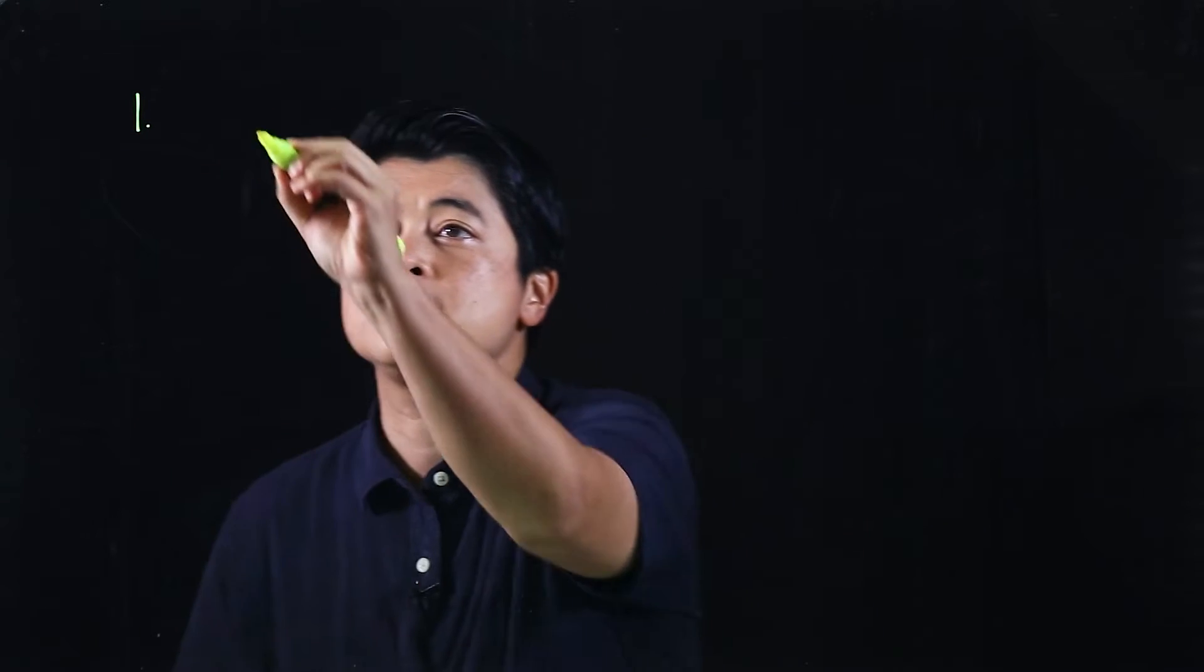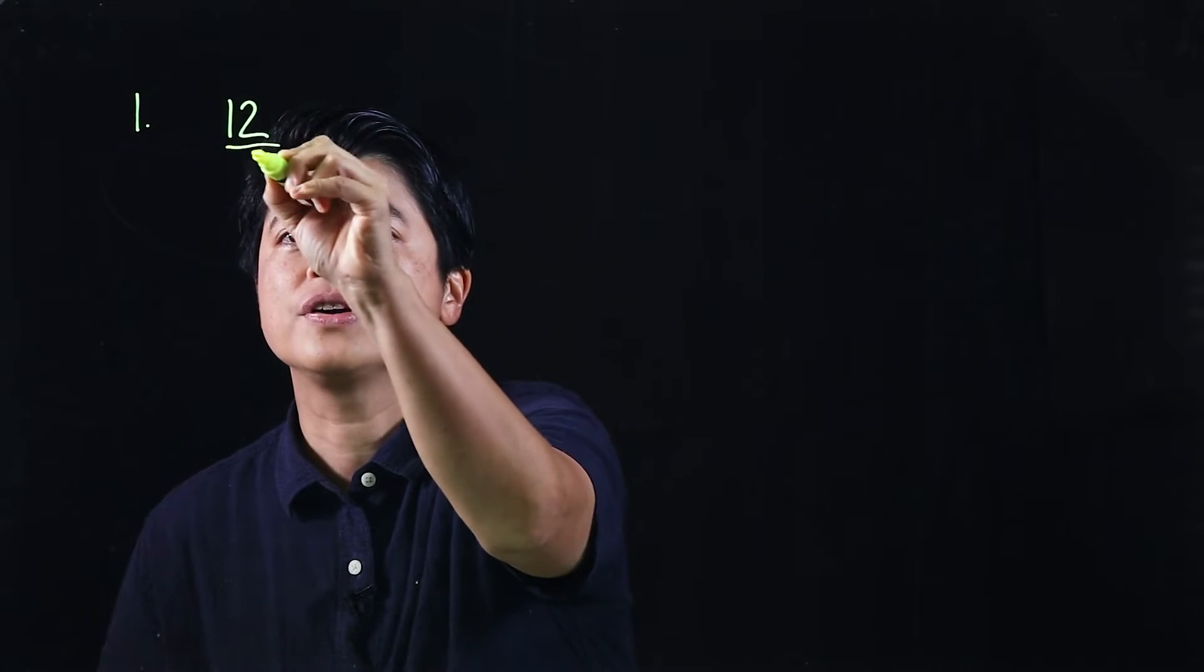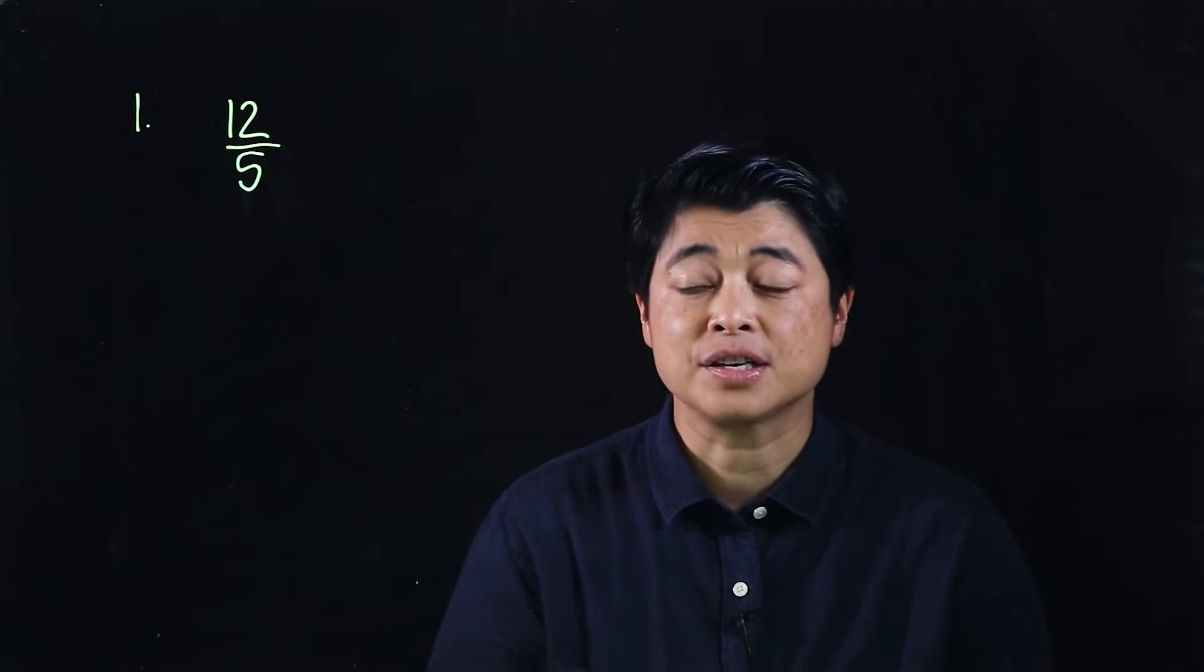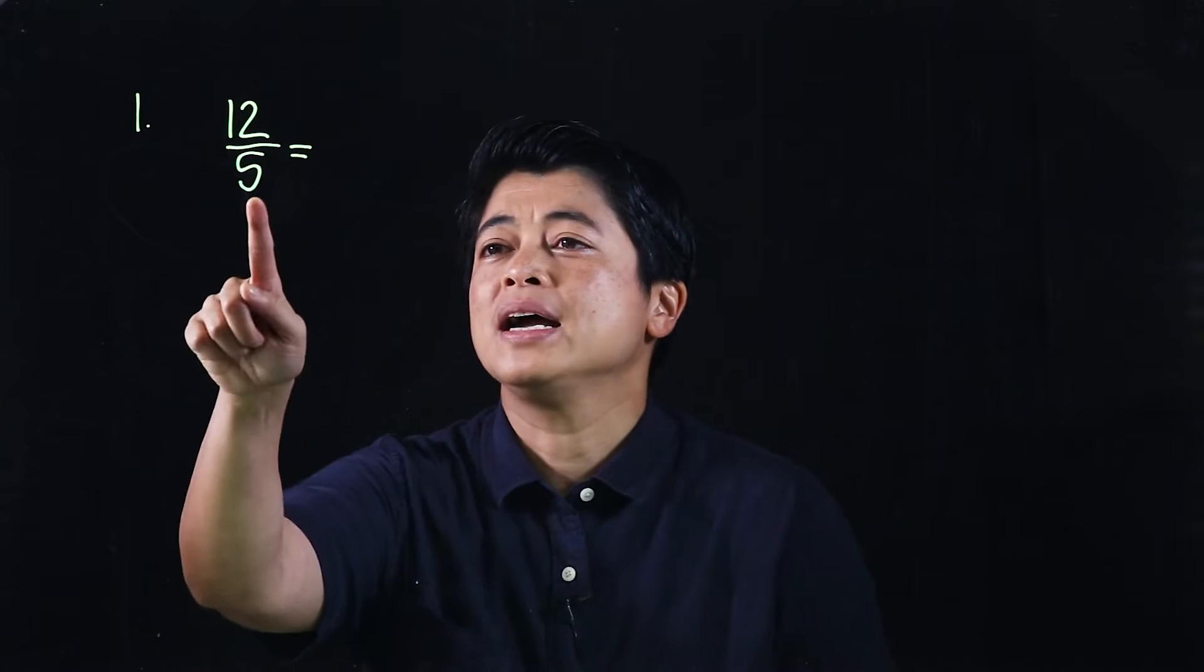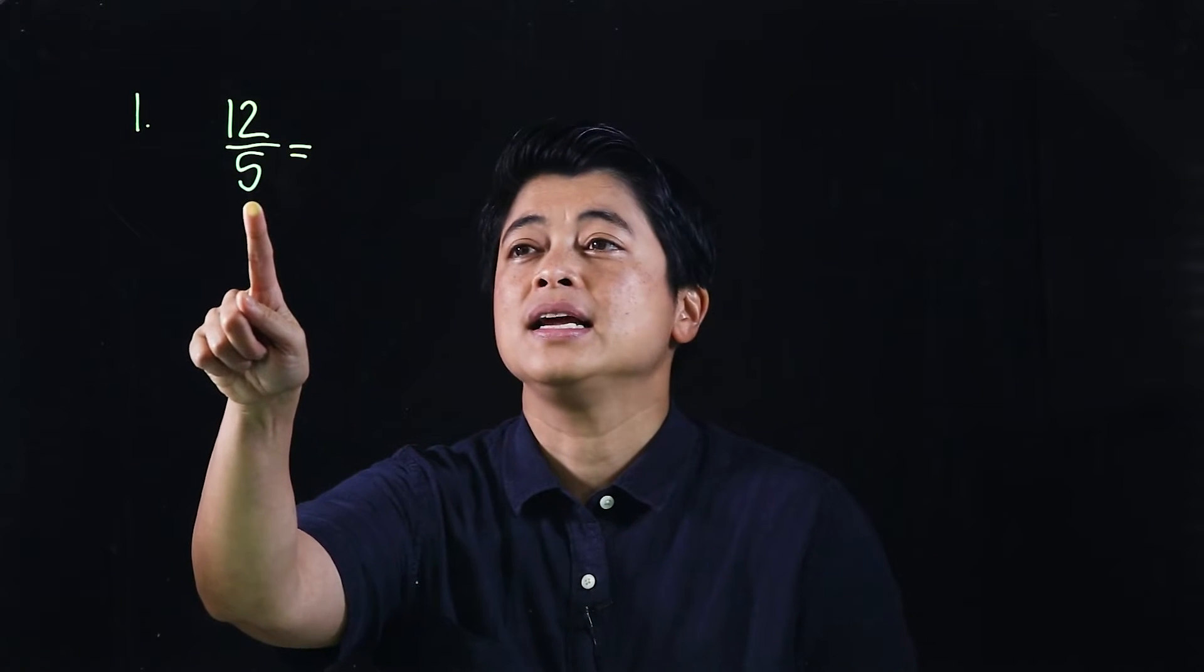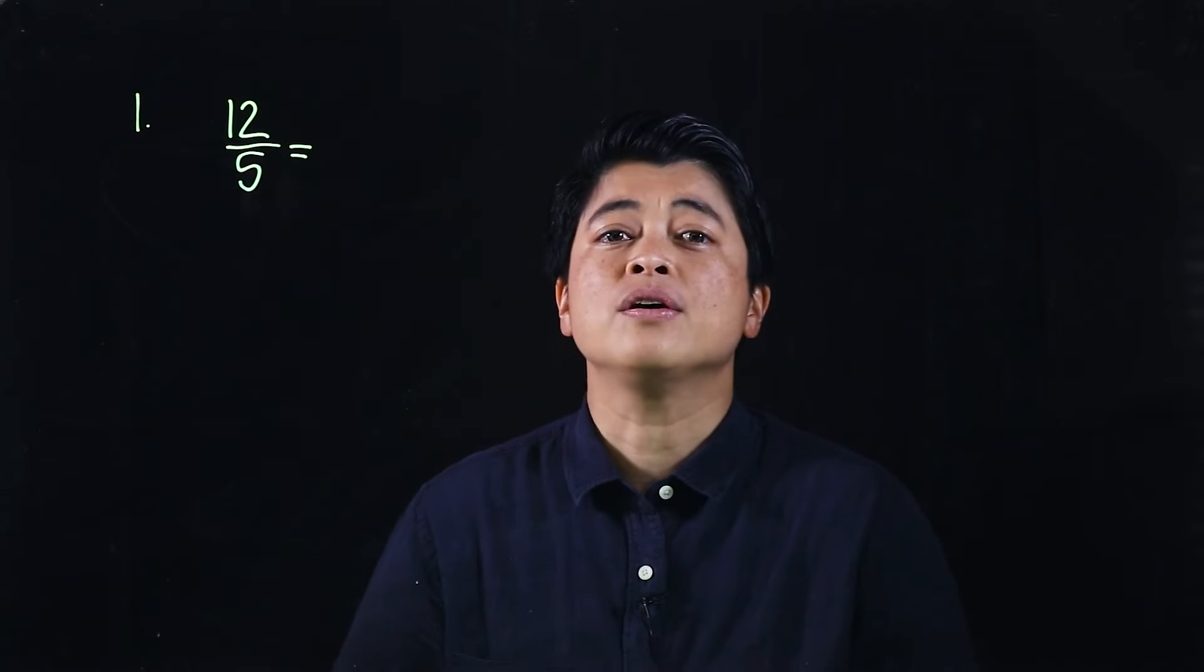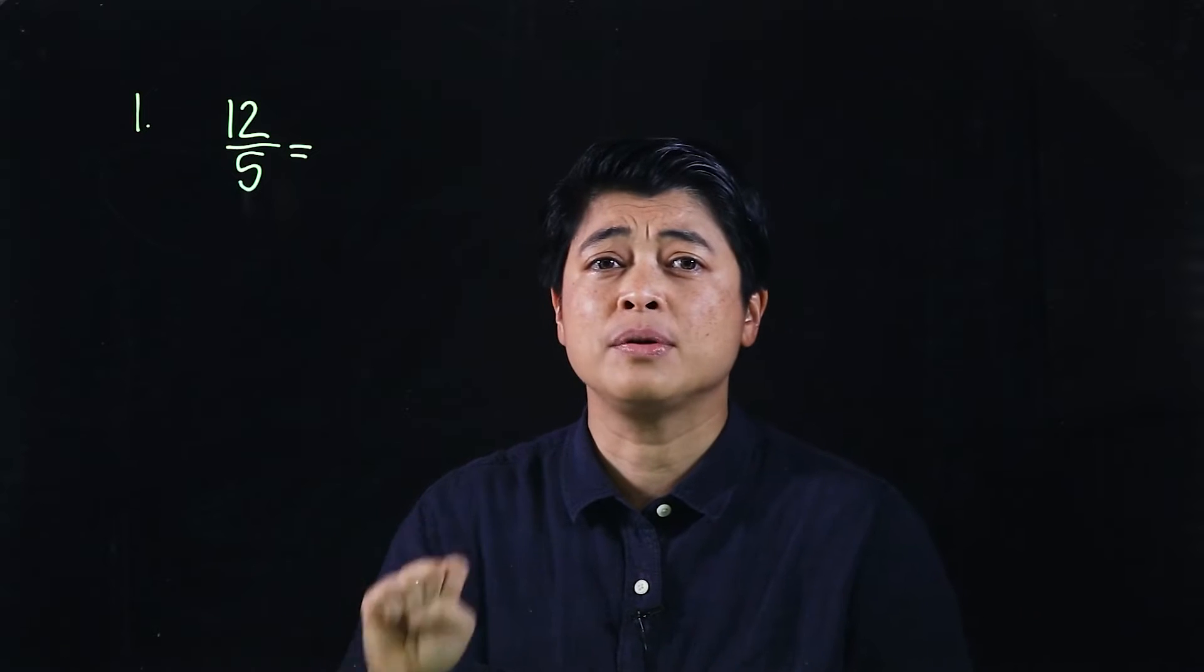On page 15, problem number one says convert 12 over 5 into a mixed number. The book has steps where it leads the kids to the answer. What the book does is it counts by fives until it reaches 12 without going over.